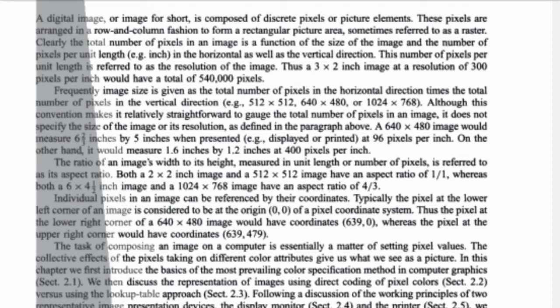The ratio of an image's width to its height, measured in unit length or number of pixels, is referred to as its aspect ratio. Both a 2 by 2 inch image and a 512 by 512 image have an aspect ratio of 1 by 1.